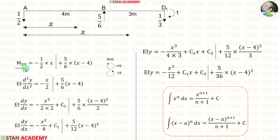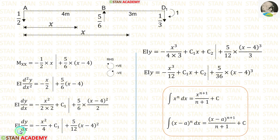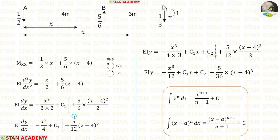Now let us equate Mxx with EI·d²y/dx². Then let us integrate; when we integrate this, we will get EI·dy/dx. For integrating X, we use the standard formula. For integrating (X minus 4), we also use the formula. Using these formulas, we make the integrations, where C1 is the constant. 2 times 2 gives 4, and 6 times 2 gives 12.